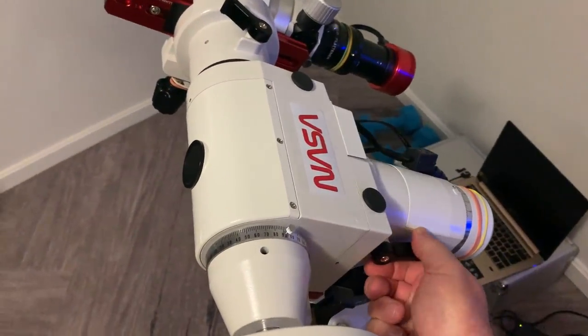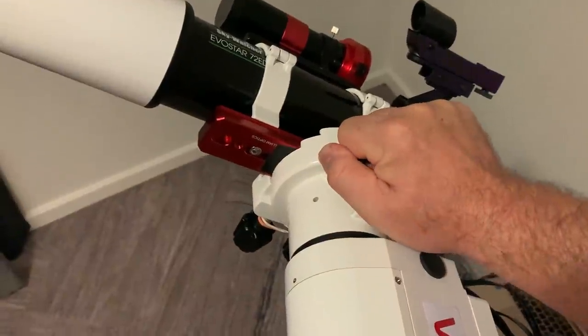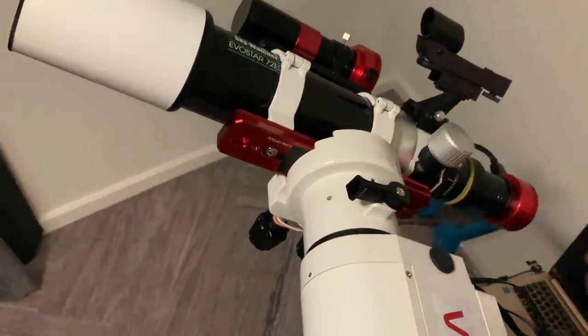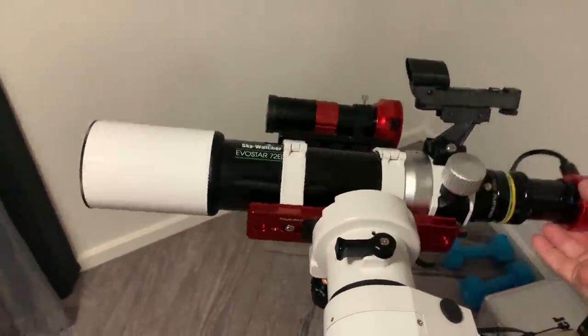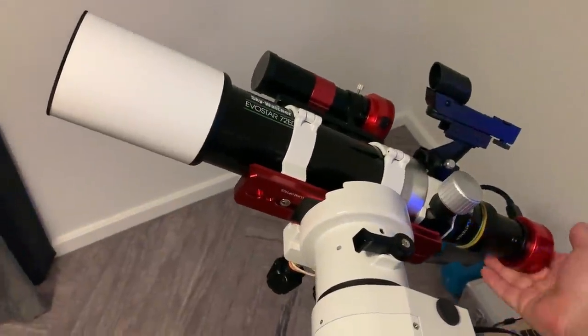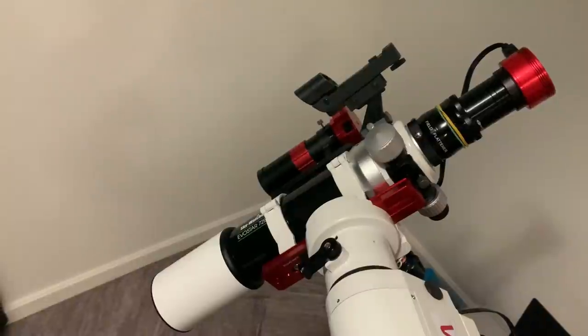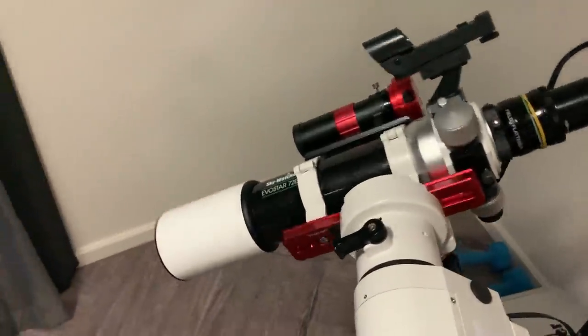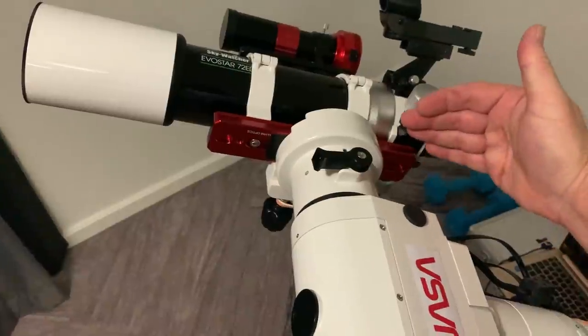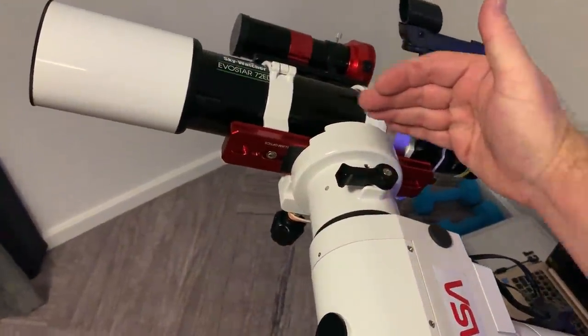I can lock that axis now and release the declination axis clutch, and that lets us balance the telescope as well. Again, as you see, the telescope will remain in whatever attitude I set it, and that means it is accurately balanced. We achieve the balance here by moving the telescope fore or aft in the base.